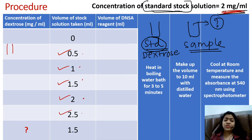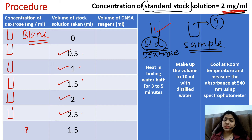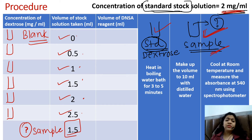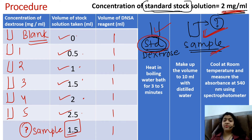So these are 5 working standards prepared from the standard stock solution of dextrose. I now have 7 test tubes ready. The first is the blank test tube — since it is blank, there is no dextrose added, so it is 0 ml. The question mark means that is my sample solution — I am taking 1.5 ml from the sample flask. In all 7 test tubes, 1 ml of DNSA reagent will be added, even in the blank. Same treatment must be given to all test tubes.